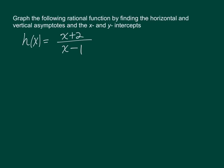Graph the following rational function by finding the horizontal and vertical asymptotes and the x and y intercepts. The function is h of x equals x plus 2 over x minus 1.